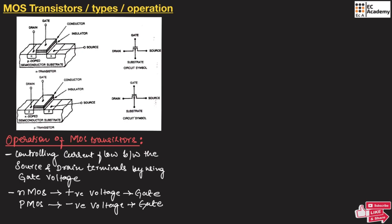Similarly, in PMOS a negative voltage is applied across the gate. This negative voltage attracts holes from the N-type substrate, forming a layer below the gate region. A channel is thus formed between drain and source so that current can easily flow.